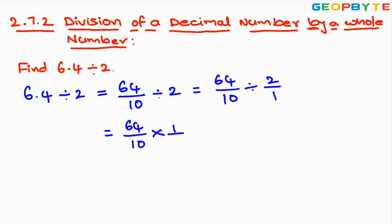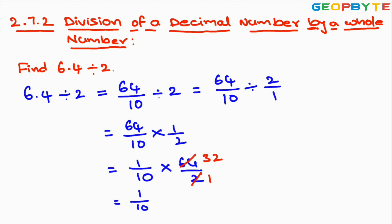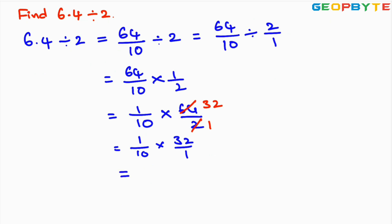We need to find the reciprocal of 2 by 1. The reciprocal of 2 by 1 is 1 by 2. So we are getting 64 by 10 into 1 by 2, which we can write as 1 by 10 into 64 by 2. Here, 2 32s are 64, so we get 32 by 1, giving us 32 by 10.